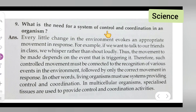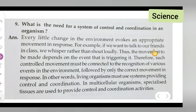What is the need for a system of control and coordination in the organism? Every little change in the environment evokes an appropriate movement in response. For example, if we want to talk to our friends in class, we whisper rather than shout loudly. Thus, the movement to be made depends on the event that is triggering it.